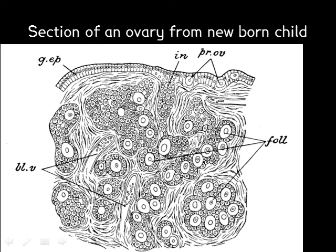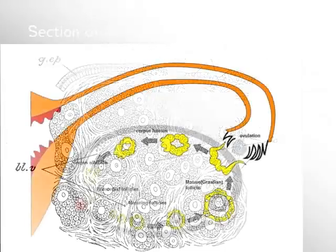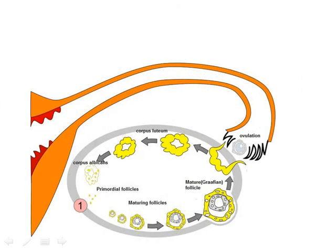When ovulation occurs, the remnants of the follicle form a structure called the corpus luteum. Whereas the follicles normally produce oestrogen, the corpus luteum chiefly produces progesterone.